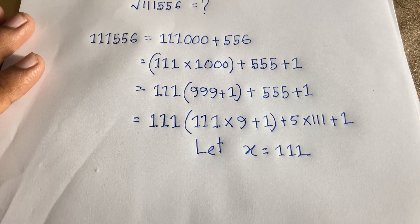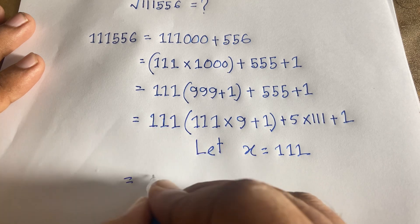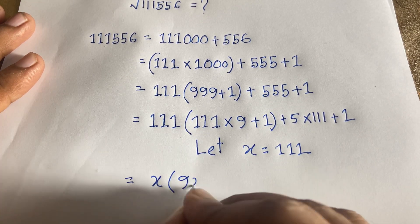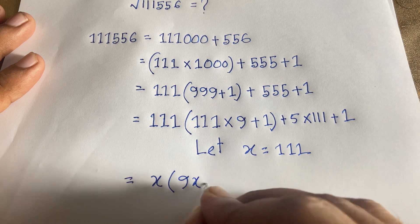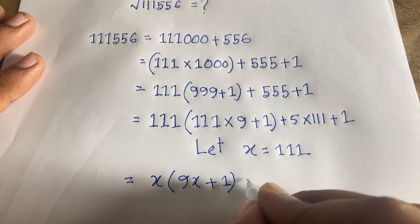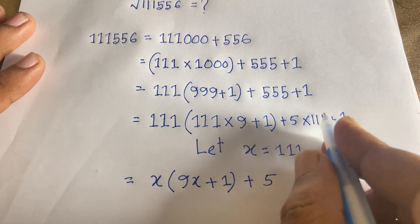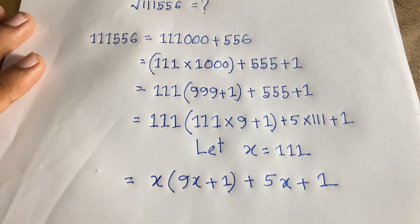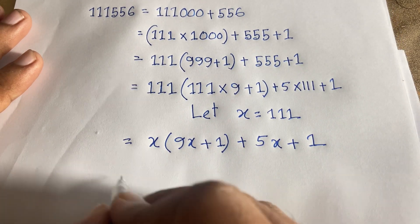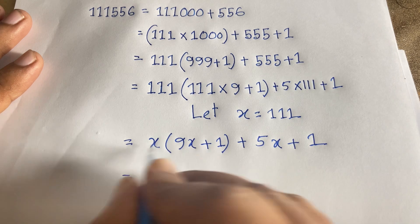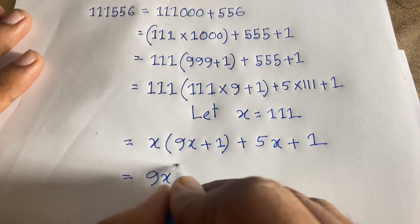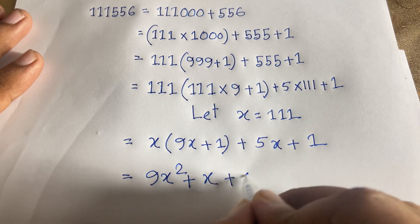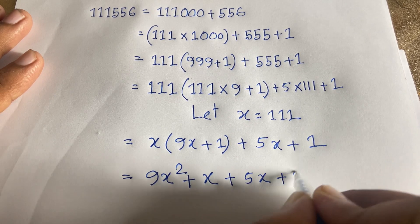Now I can say that here we have x, and x times 9 equals 9x plus 1, plus 5 times 111, which is x, plus 1. So at this moment I can say that 9 times x gives 9x squared plus 1 times x equals x, plus 5x plus 1.